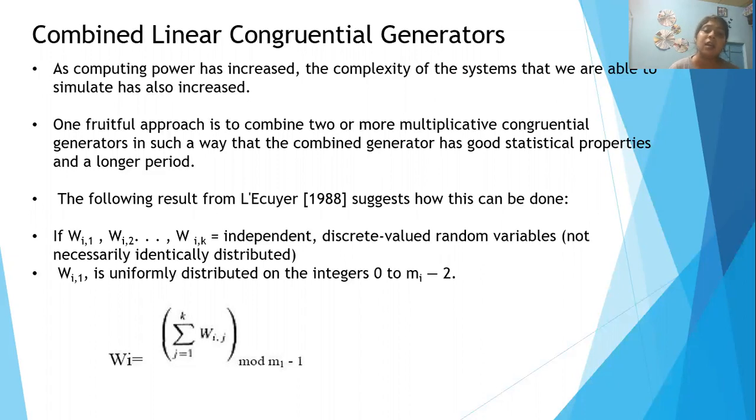How do we calculate W_i? W_i is the summation of W_i,j, j from 1 to k, modulus m_i minus 1.